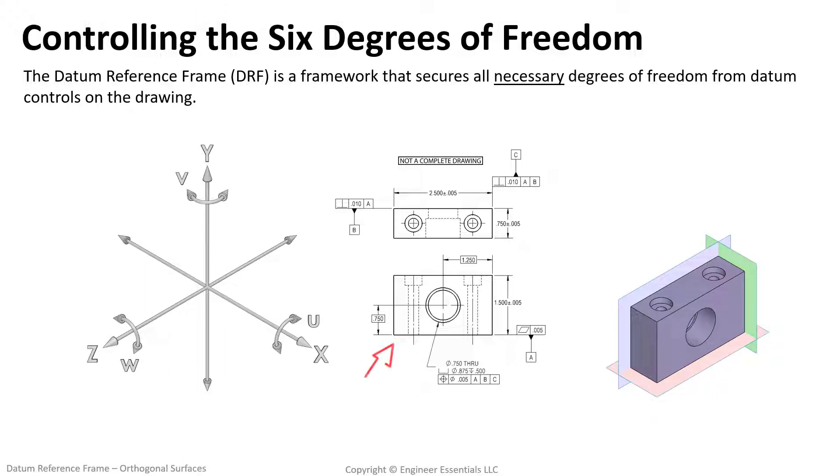Let's start with datum feature A. The surface here is being controlled by flatness. It is also indicated by this symbol that is datum feature A. Since we know by the datum reference symbol placement that this is referencing a surface, we know the datum is going to be planar. Remember the datum is a theoretically perfect plane that is derived from the imperfect tangible surface of the part. As a refresher we know that planes can lock down one translation and two rotations.